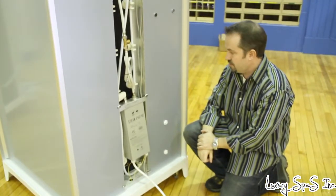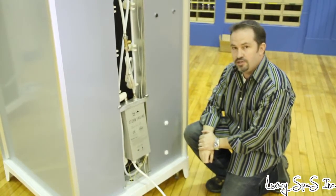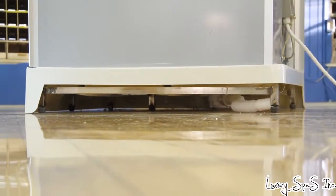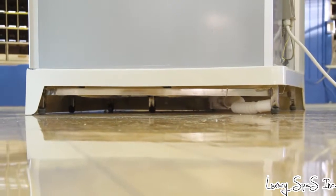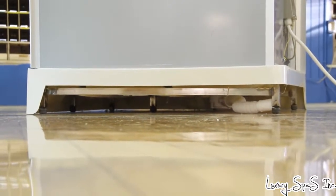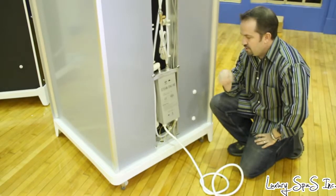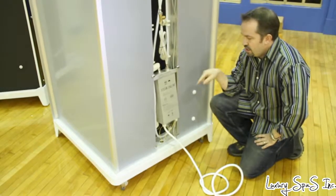What's nice about the unit, they also left five inch clearance underneath the base of the unit for your flexible drain hose. So wherever your existing drain is at, assuming it's right underneath the base of the unit, you could route it right to it, should be very easy to hook that up.